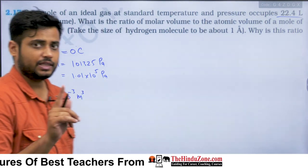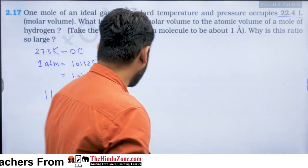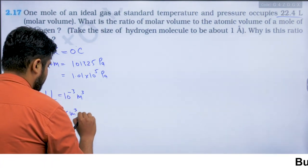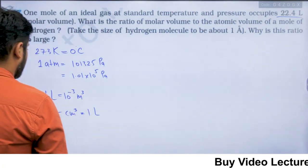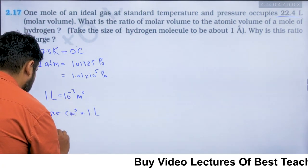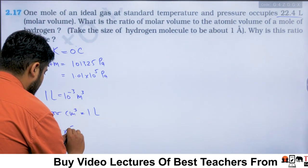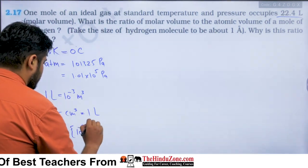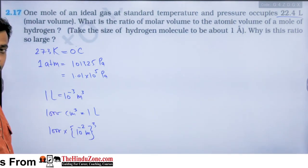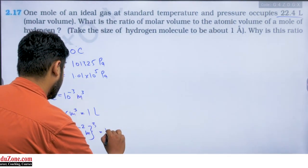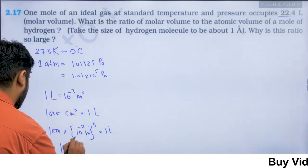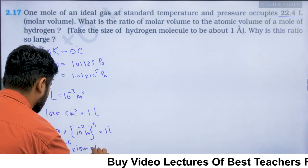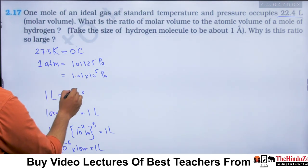One liter equals 10⁻³ m³. This is because 1 liter = 1000 cm³, and 1 cm = 10⁻² m, so 1 cm³ = 10⁻⁶ m³, and 1000 × 10⁻⁶ = 10⁻³ m³. Therefore molar volume = 22.4 × 10⁻³ m³.